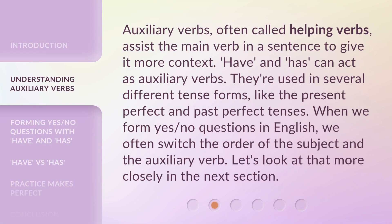Auxiliary verbs, often called helping verbs, assist the main verb in a sentence to give it more context. Have and Has can act as auxiliary verbs — they're used in several different tense forms, like the present perfect and past perfect tenses. When we form Yes/No Questions in English, we often switch the order of the subject and the auxiliary verb. Let's look at that more closely in the next section.